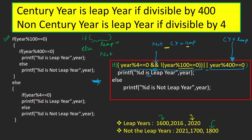For 1800 — a century year but not a leap year: divisible by 4 (true), divisible by 100 (true) — NOT makes it false — true AND false gives false; 1800 divided by 400 gives remainder 200, so that is false. False OR false gives false, so we go to else and say 1800 is not a leap year. The program works correctly.